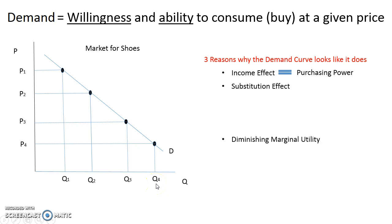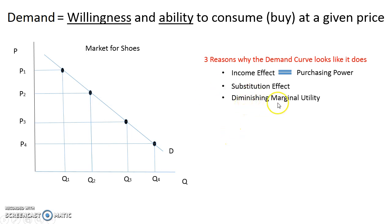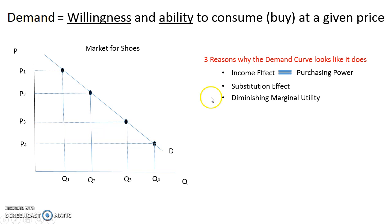The third reason, which is probably the most important for testing purposes, is diminishing marginal utility. Diminishing means going down; marginal means with each additional unit; utility is satisfaction or value. With each additional unit that a person consumes, the value or satisfaction becomes less and less. You're not willing to pay as much for more of the same product. Those are the three reasons why the demand curve looks like it does — especially make sure you understand diminishing marginal utility.